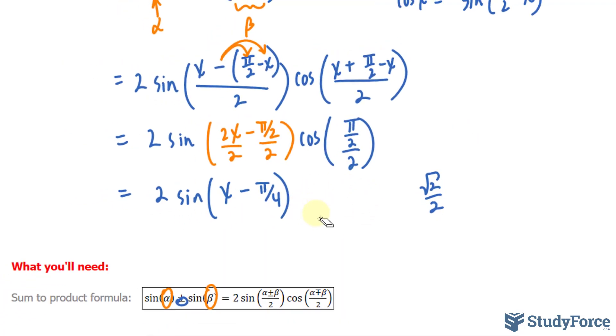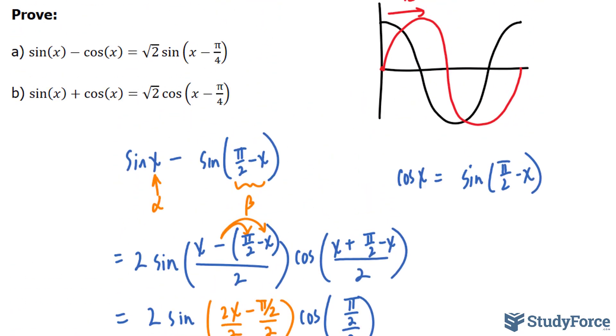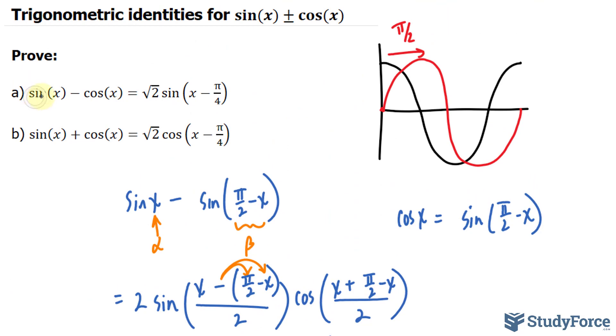So, I'll replace all of that with the square root of 2 over 2 and algebraically simplifying. That 2 and that 2 cancels out, leaving us with the square root of 2 sin(x - π/4). And we have proven that the left side is, in fact, the right side.